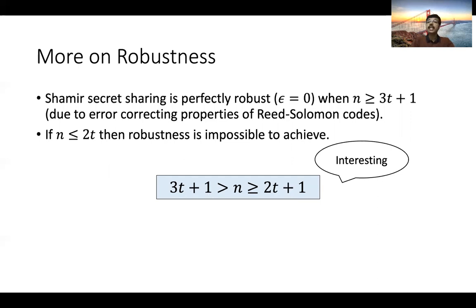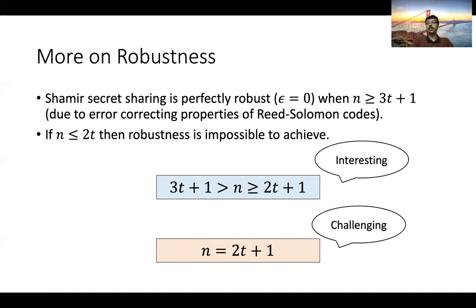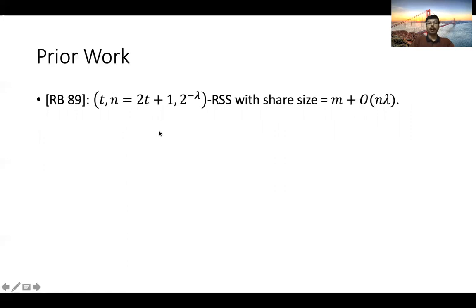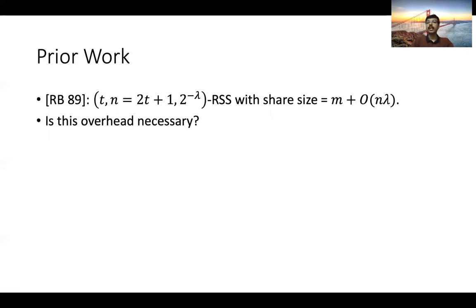The most challenging setting is when N is equal to 2T + 1. The work of Rabin and Ben-Or also gave a construction of robust secret sharing for N = 2T + 1 with error parameter 2^{-lambda}. The share size of their construction was M plus O(N * lambda), where M is the length of the secret — an additive overhead of O(N * lambda) over the non-robust variant. A natural question to ask is whether this overhead is necessary.